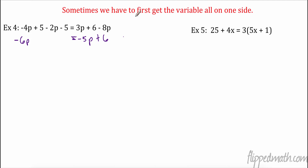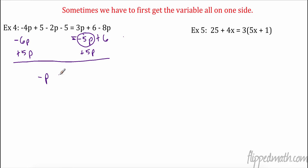It absolutely does not matter which side you move. The first rule I look for is: is there one side that only has a variable by itself? Yes — so I don't want to move that side. I'm going to move the negative 5p. The opposite of subtracting 5p is adding 5p, so I add 5p to both sides. Then I have negative p equals 6. That's a negative 1, so I divide both sides by negative 1, and we get p equals negative 6.